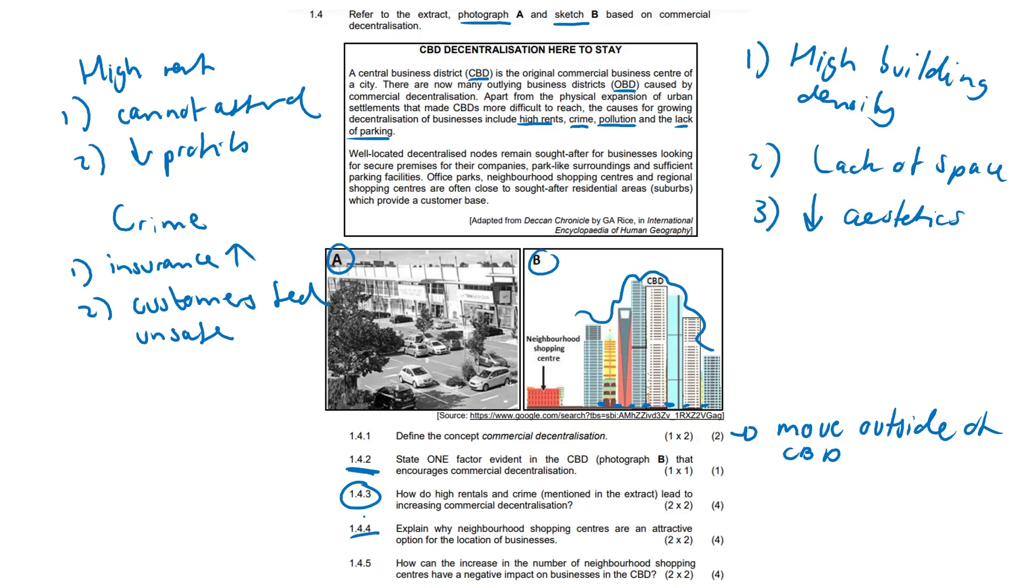1.4.4 Explain why neighborhood shopping centers are an attractive option for the location of businesses. A variety of shops under one roof makes shopping convenient. Think of just very old markets from way back when. The close proximity to customers, markets, employees, it saves time and costs. It's more a matter of convenience and proximity. But also aesthetic appeal, parking space, better security, rent is a bit more affordable as well.